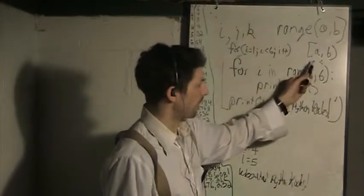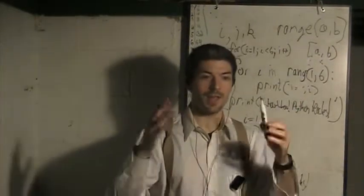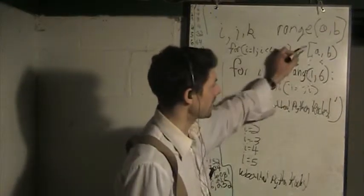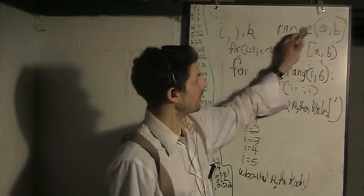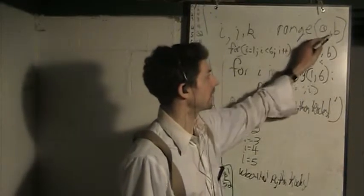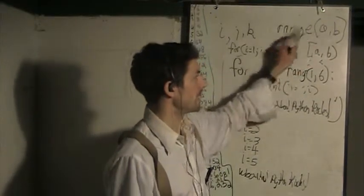I bet with learning the mathematical notation of exclusivity, that bracket, and inclusivity, that bracket, you'll remember that the range function of Python does not include the B value, the B industry value,